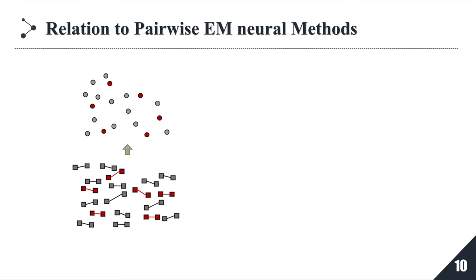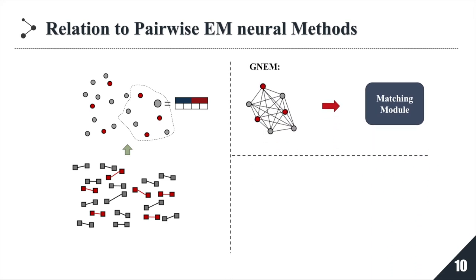At first, GNEM uses the similarity vectors produced by the pairwise similarity module as initial node representations. A node here equals to a record pair in pairwise neural models. Moreover, given the graph, the interaction between record pairs in the graph is controlled by the edge weights defined in the adjacent matrix. The weights here are learned by fully-connected layers based on node features.